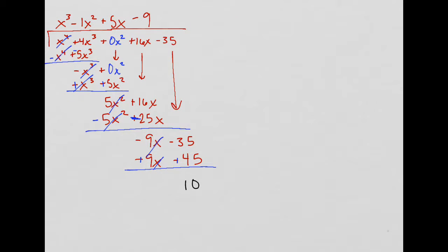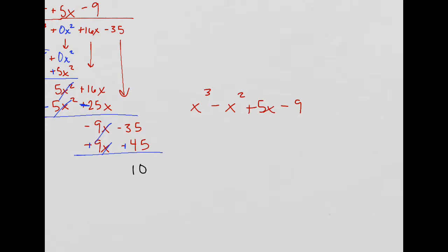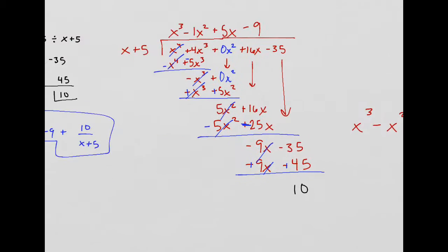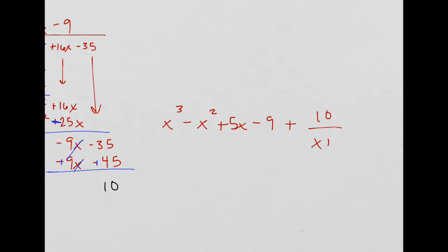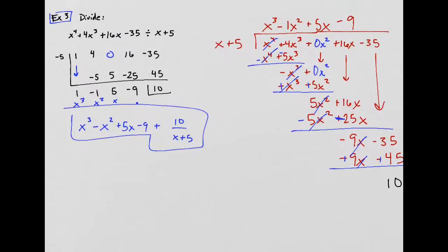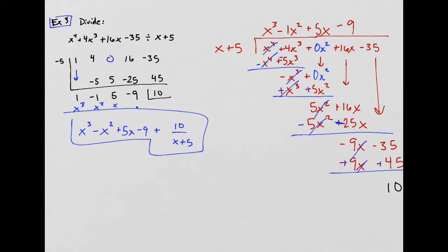x cubed minus x squared. That took me almost double the time. It's like 4 minutes. The other one was 2 minutes and 20 seconds. So, almost double the time. I'm going to have just x squared plus 5x. And then 10 over the divisor. You can't forget the divisor, x plus 5. Okay. And that is, indeed, the same.